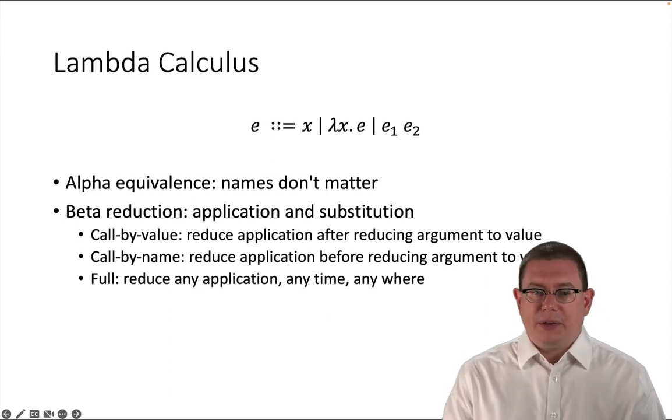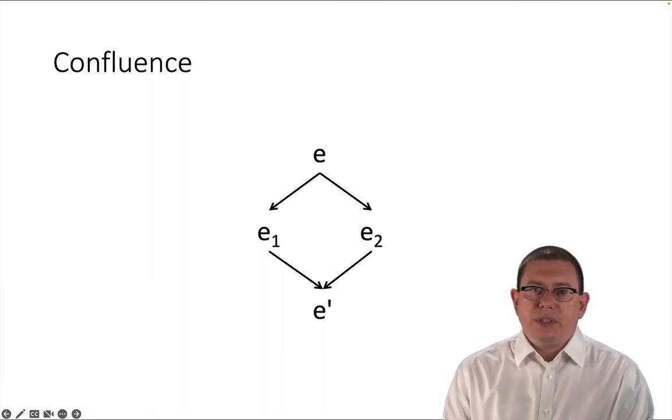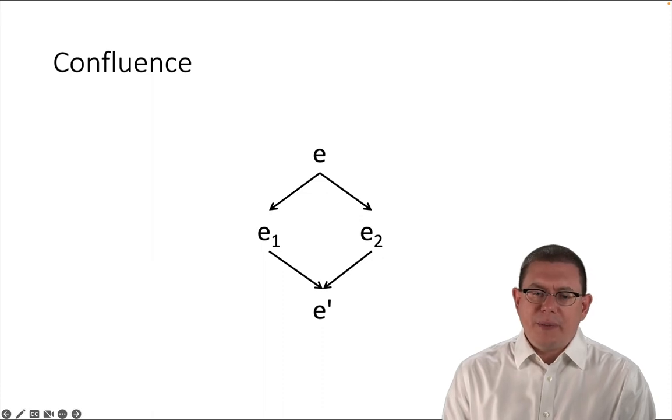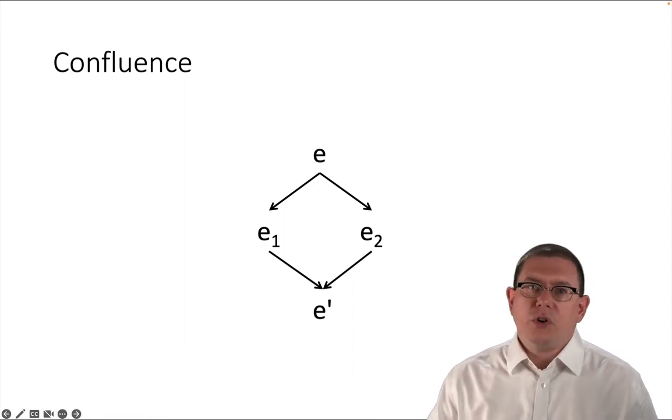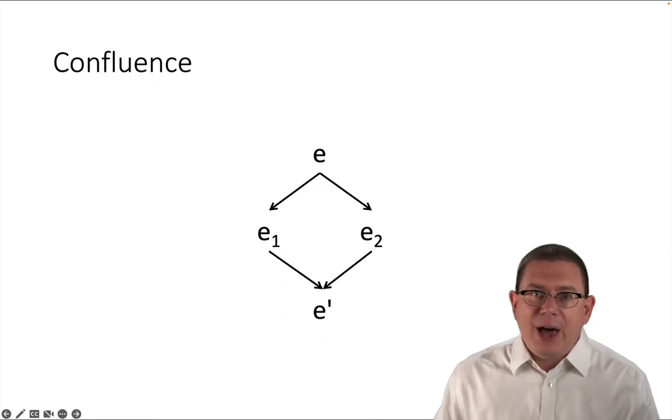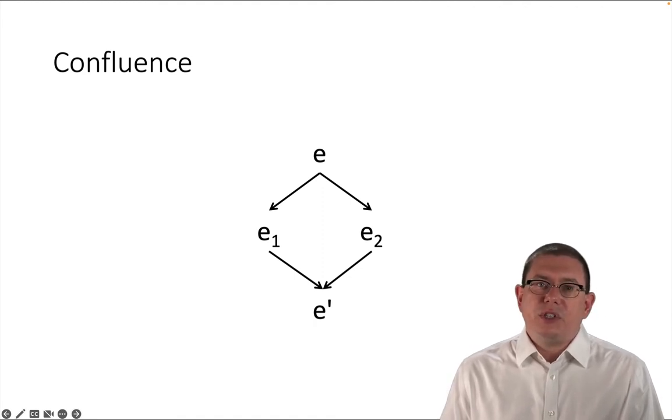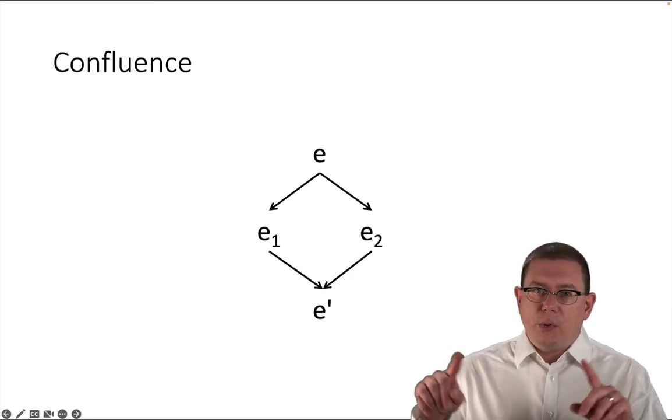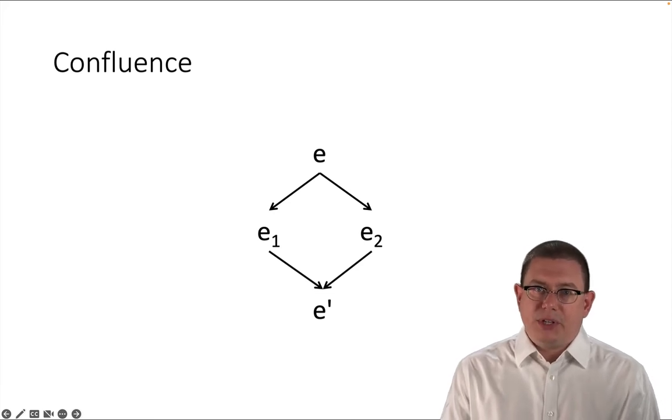So reviewing, beta reduction is about application of functions to arguments. Once you identify that, you have the choice to make as to whether or when you have to evaluate an argument to a value before applying the function. One property that you can think about is whether it makes a difference which order you do the evaluations in. It might be nice if no matter which order you picked, eventually they got back around to the same expression. If that's always the case for the reduction strategies that you're using, then the language satisfies a property called confluence. Like it's like a river might flow apart for a while but then come back together. That's the notion of confluence here.